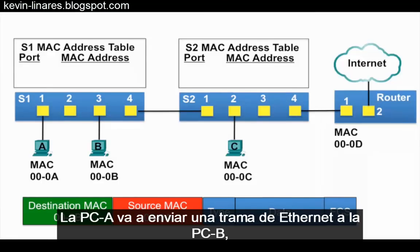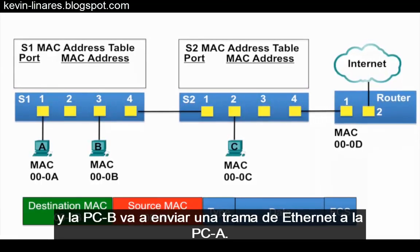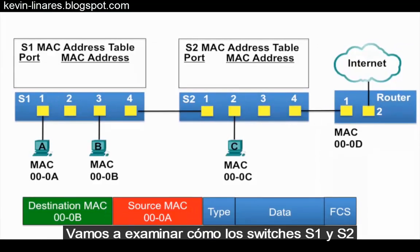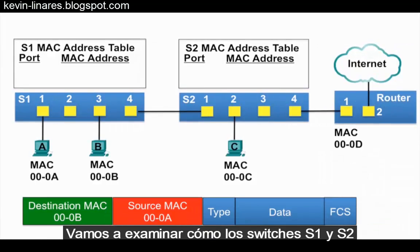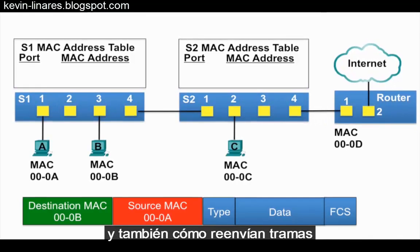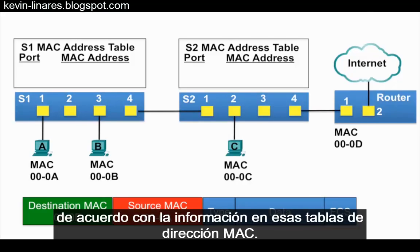In this video, PCA is going to send an Ethernet frame to PCB, and PCB is going to send an Ethernet frame to PCA. We're going to examine how switches S1 and S2 build their MAC address tables, and also how they forward frames based on the information in those MAC address tables.